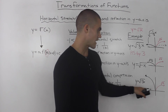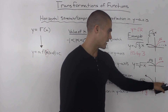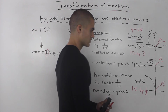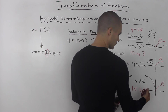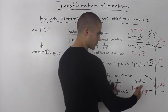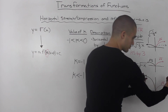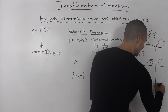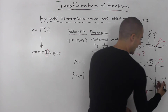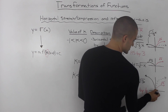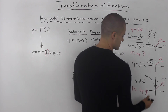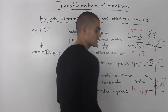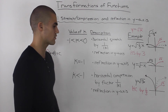Showing this graphically: the red represents the base parent function, the square root of x. Transforming it by first compressing it horizontally and then reflecting it in the y-axis gives the resulting function, which represents y equals the square root of (−3x).